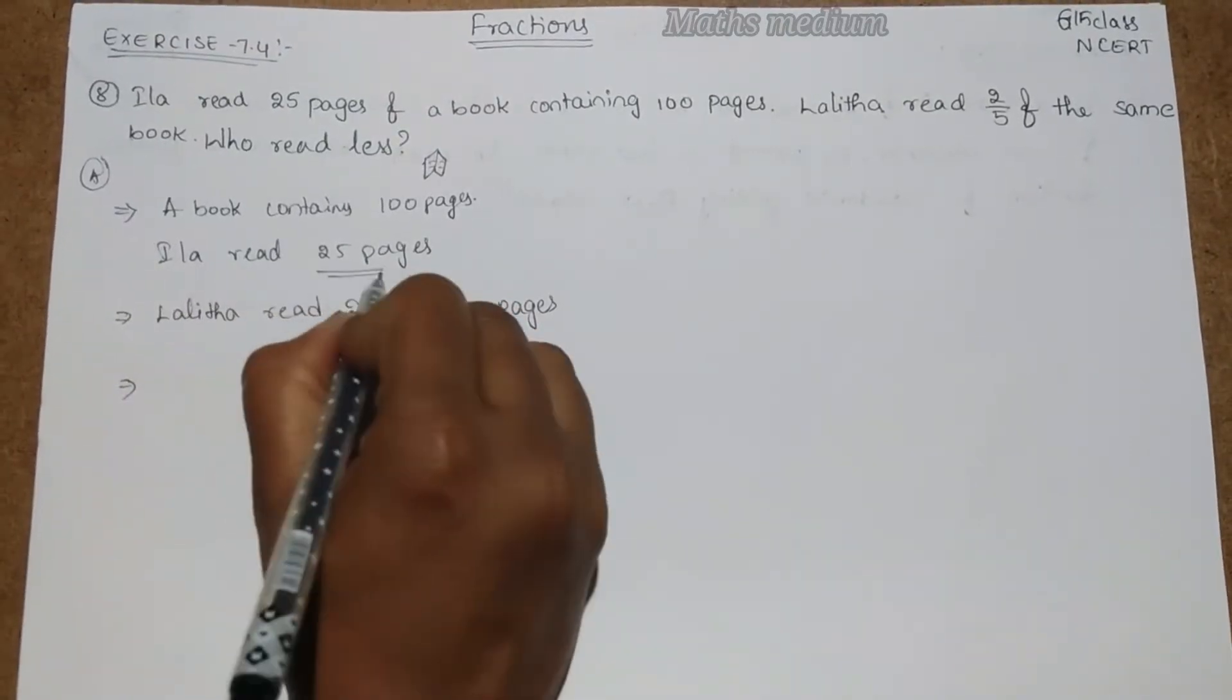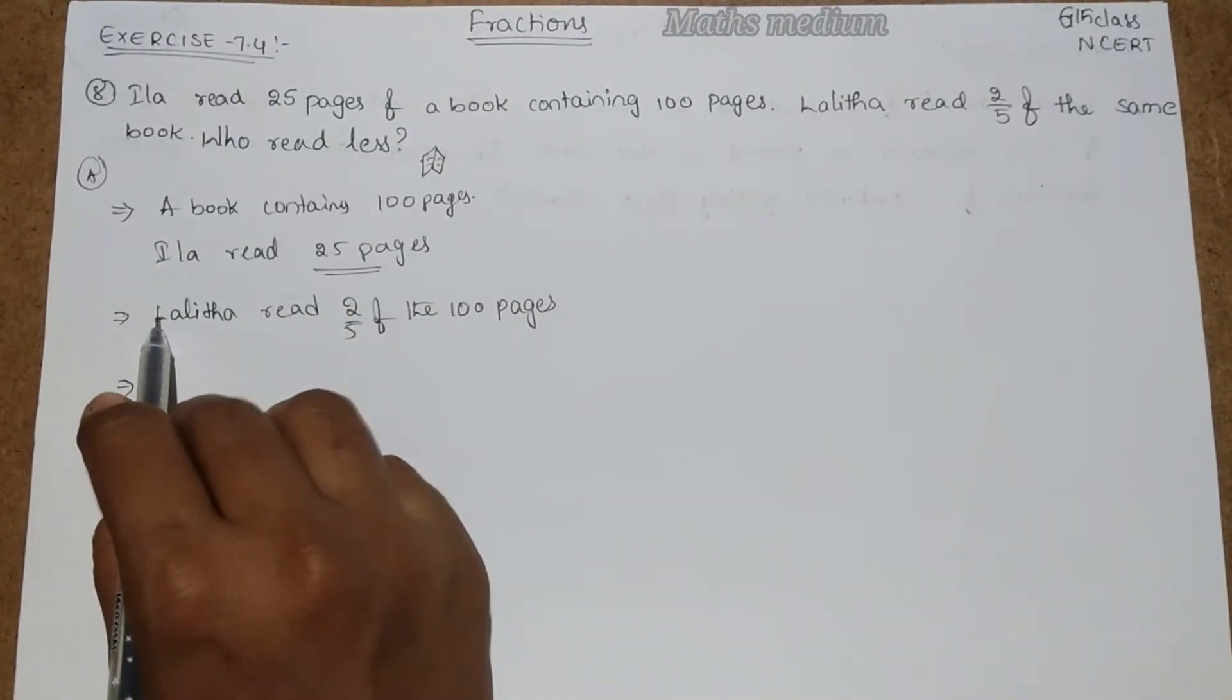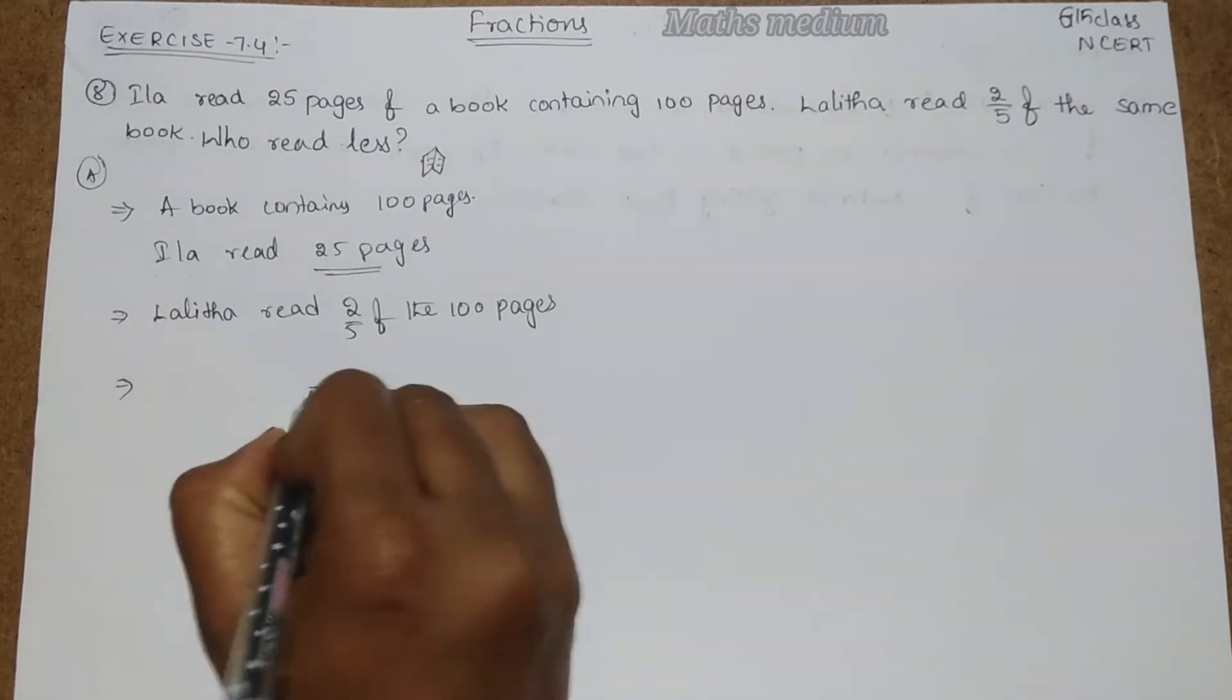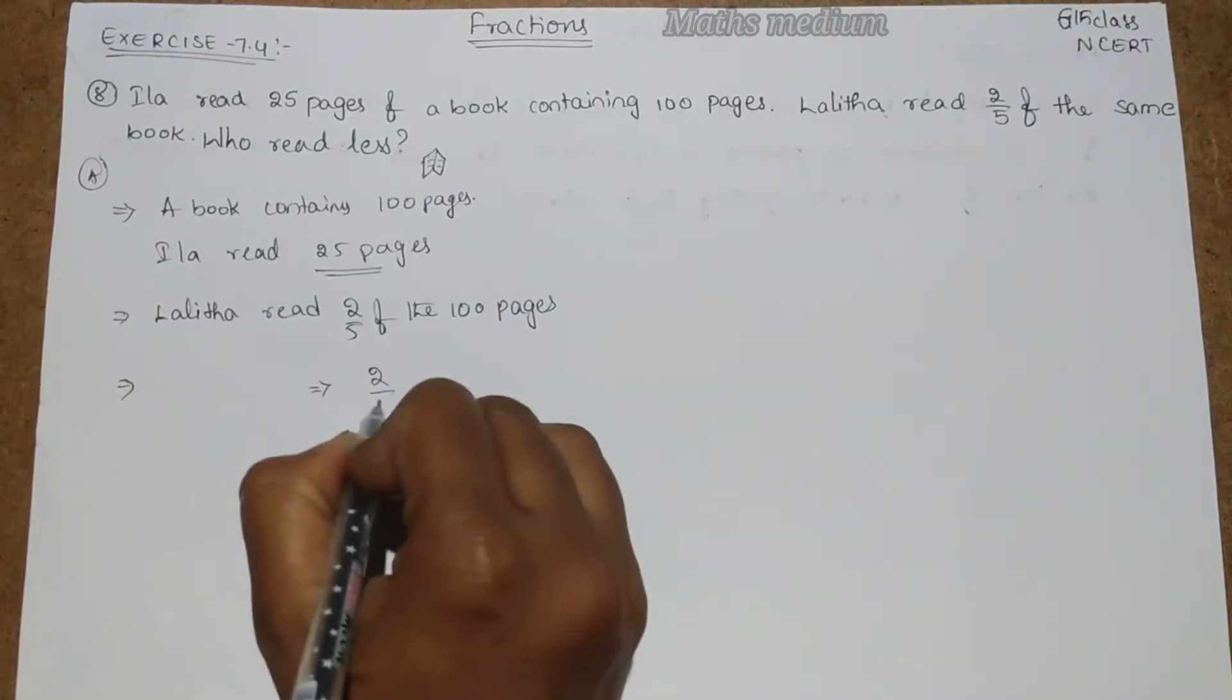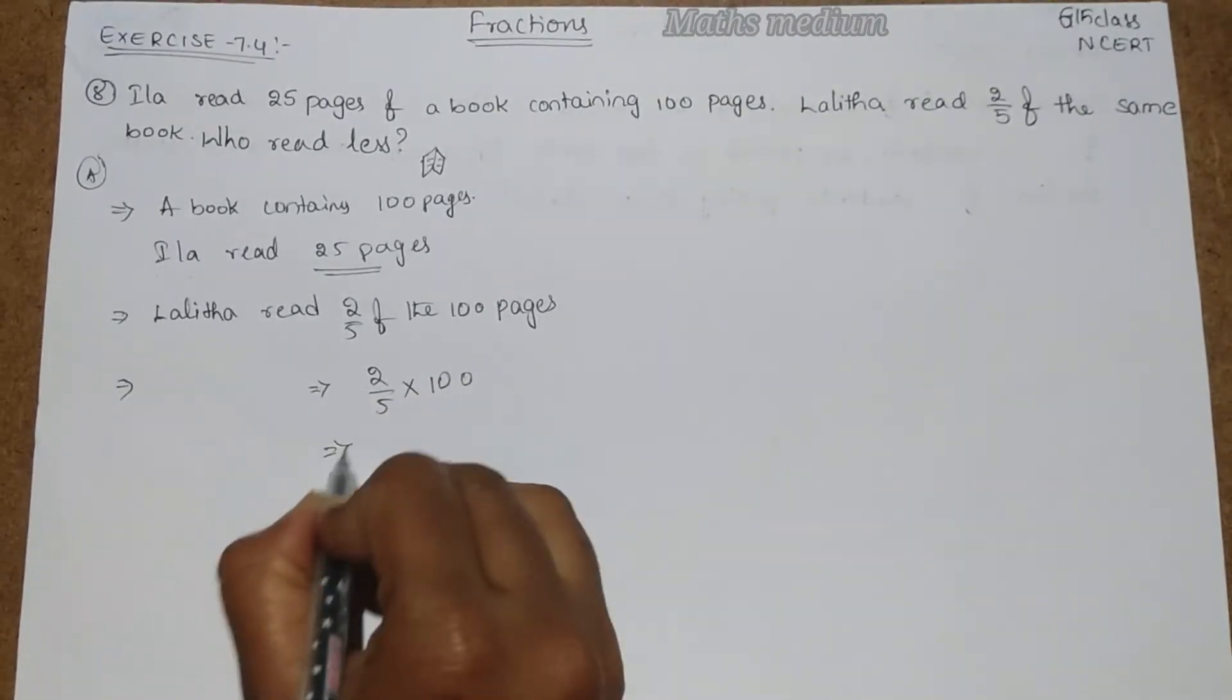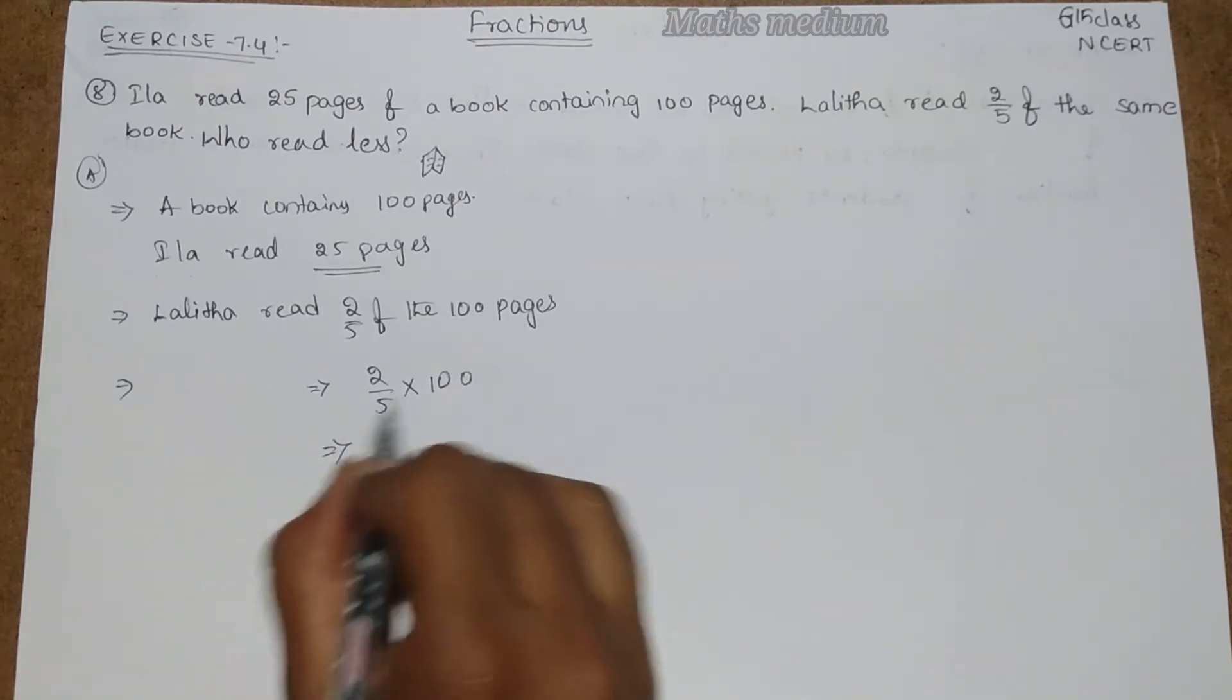We know Ilar reads 25 pages, but we don't know how many pages are read by Lalitha, so we have to find it. So how we are going to denote this as: 2 by 5 of is nothing but into, and here is 100 pages, right?